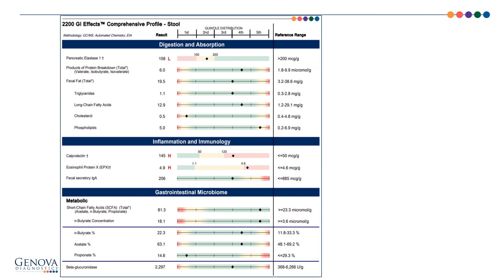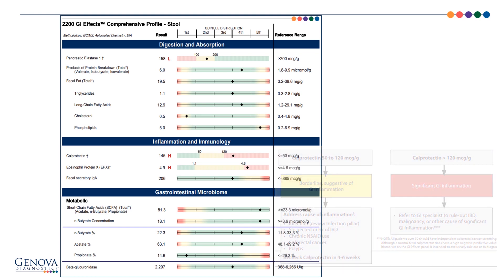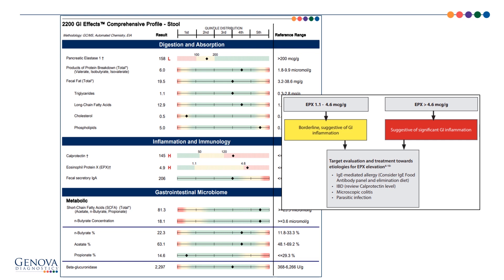His inflammatory markers are elevated. Looking at calprotectin, his level is greater than 120, which puts him in the red box — significant inflammation. The next step would be to refer him to a GI specialist to rule out IBD, malignancy, or other cause of GI inflammation. The EPX is also elevated and can be elevated with IBD, with certain parasites — more likely worms — and with allergies. The parasites he has are protozoan, not worms, so the EPX is likely elevated related to the suspected IBD. The rest of his markers on this page are all within normal limits.